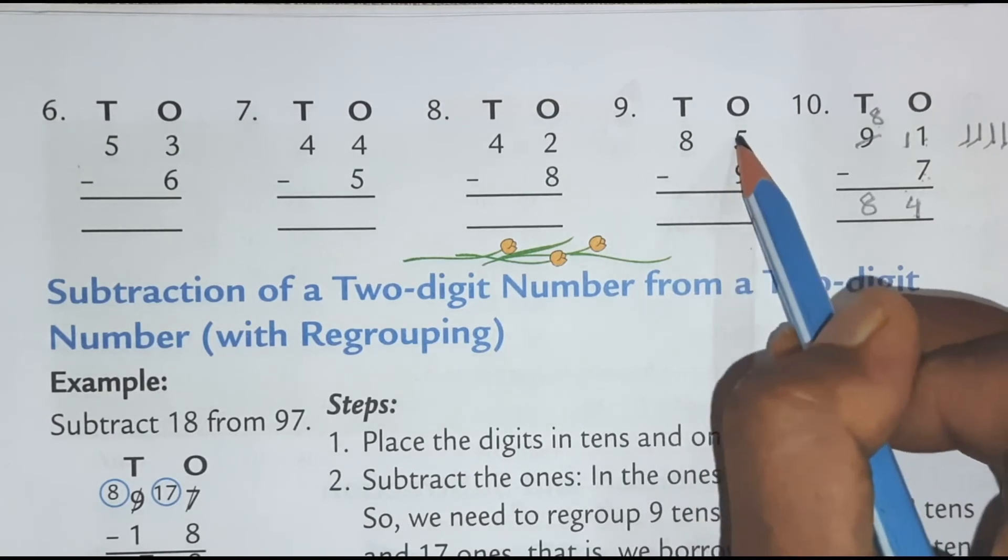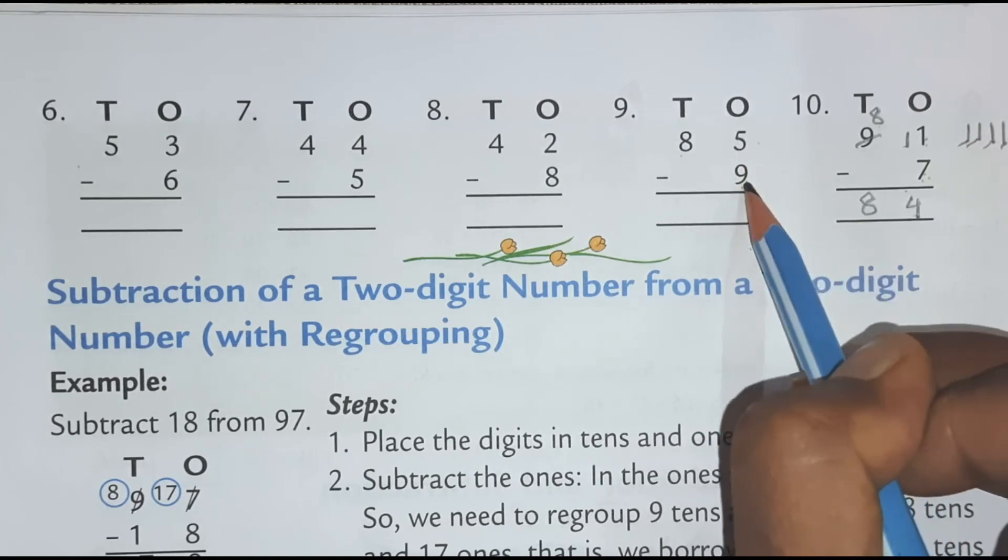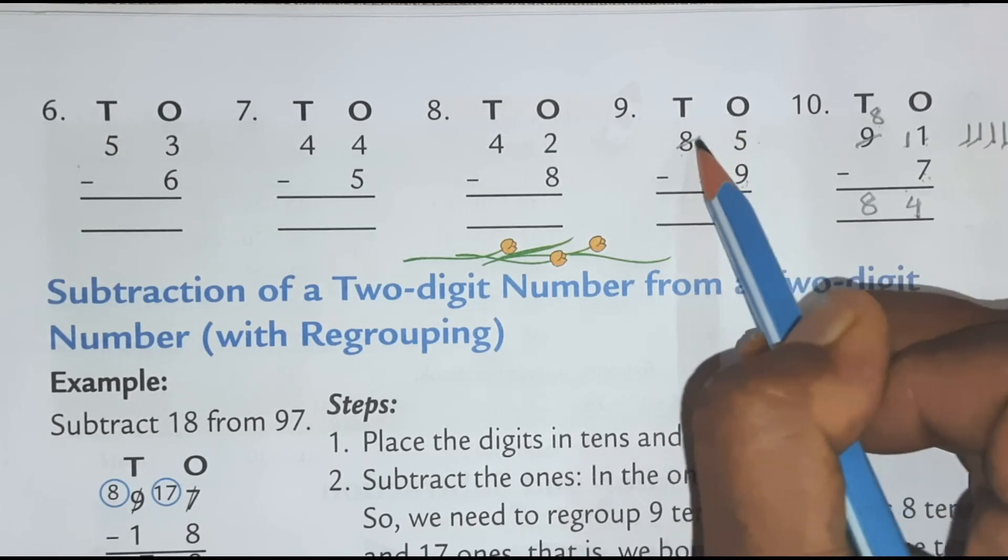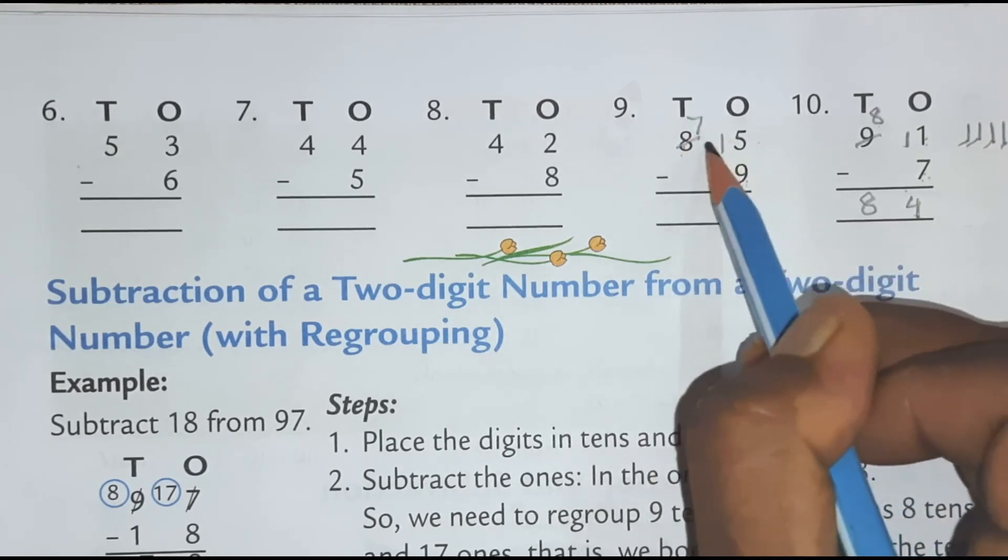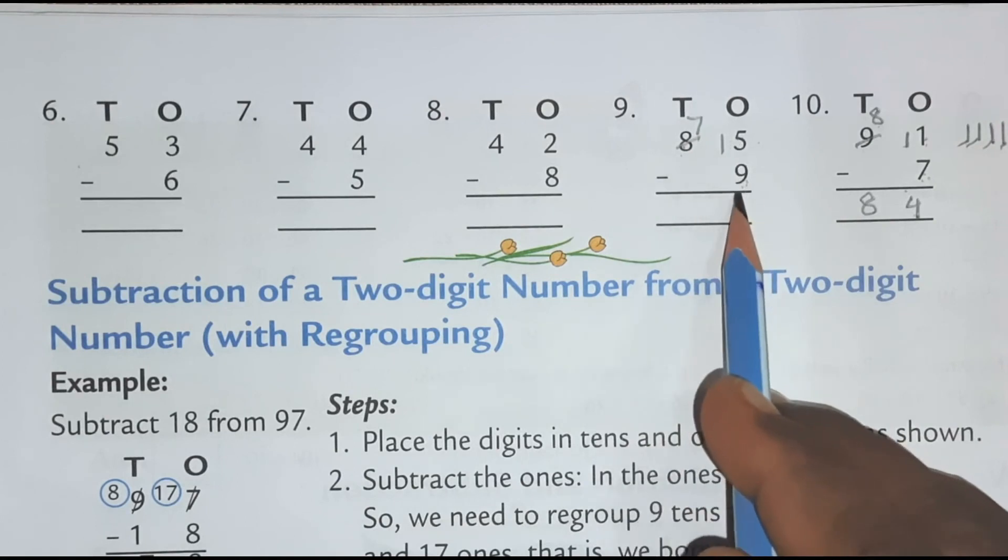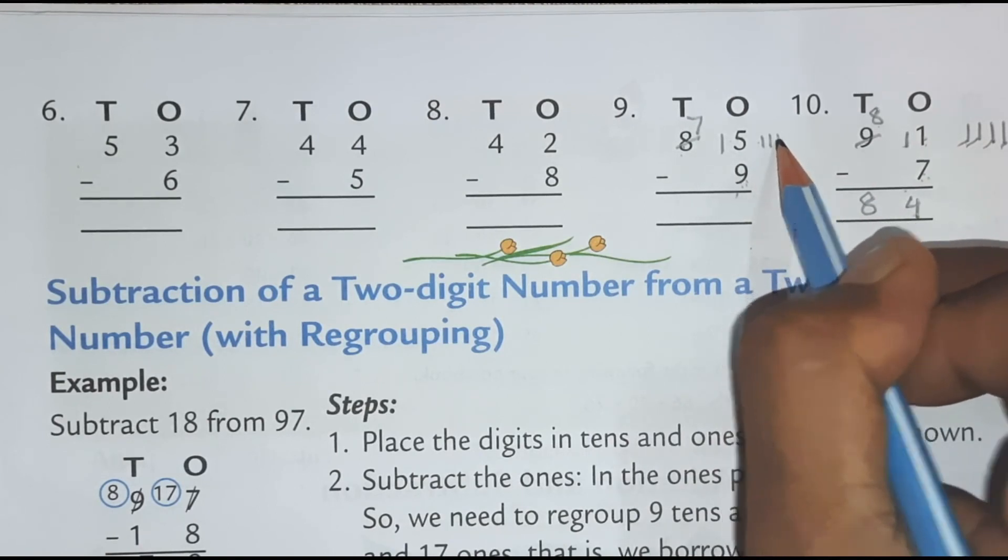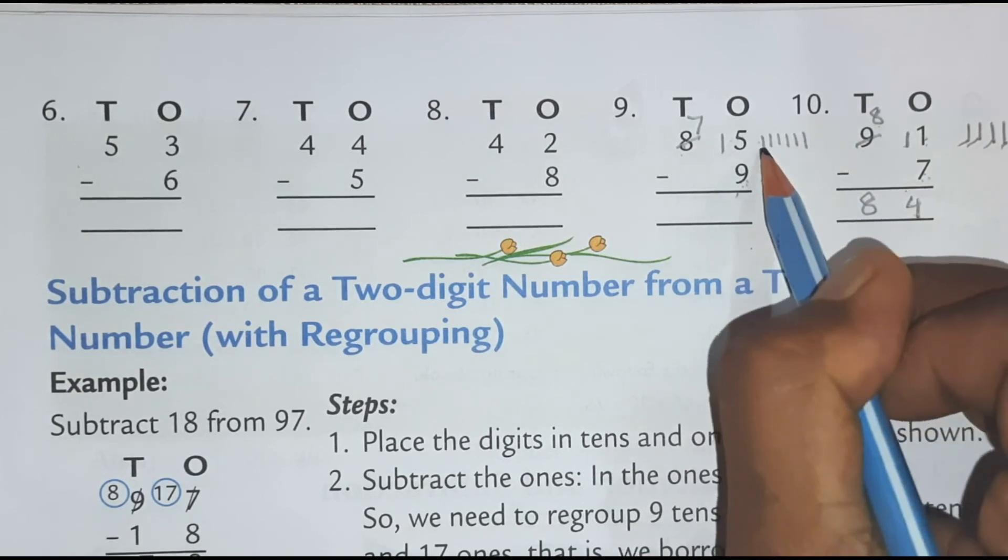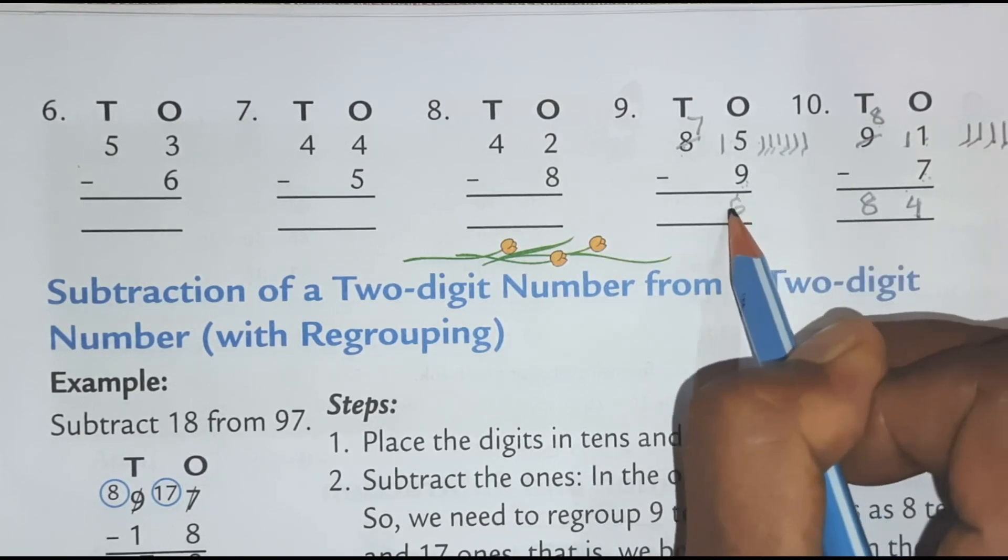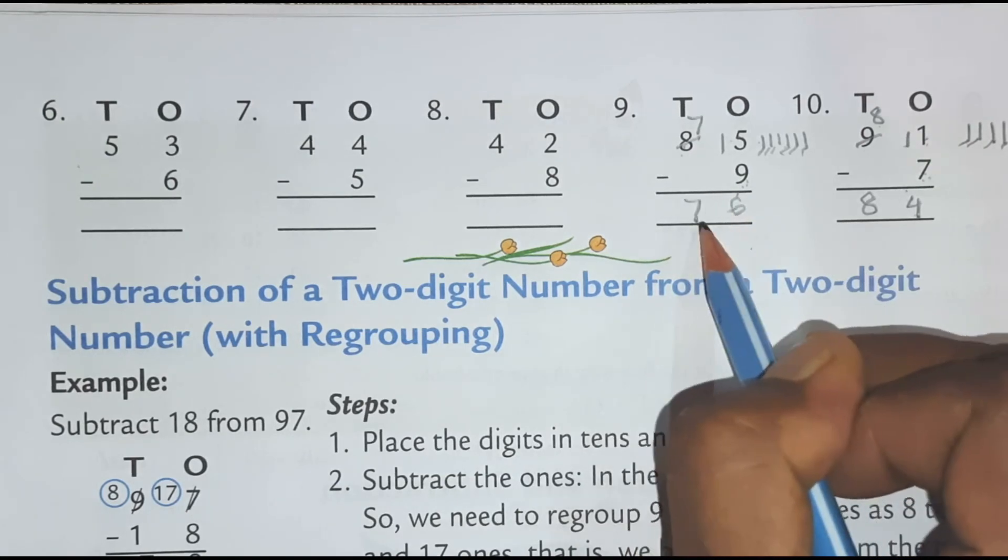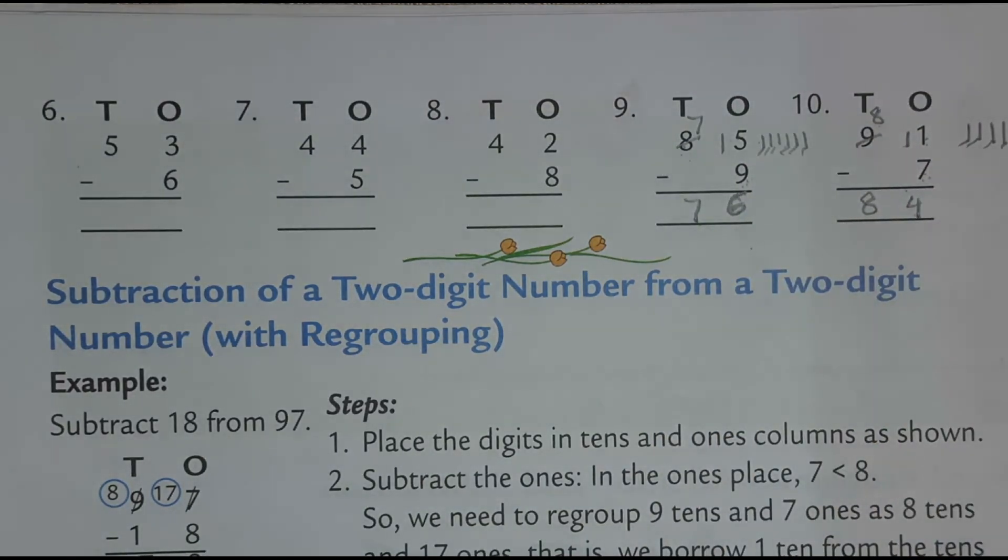Then again this 85 minus 9. So what we will do? 5 minus 9 we can't do as 5 is less than 9. So we will borrow from the 10th place. So we will borrow then 8 minus 1, 7. So 15 minus 9. So 9, 10, 11, 12, 13, 14, 15. 1, 2, 3, 4, 5, 6. So what is this? 6. Then 7 minus nothing? 7. So this is 85 minus 9 is 76. So in this way you can solve exercise.